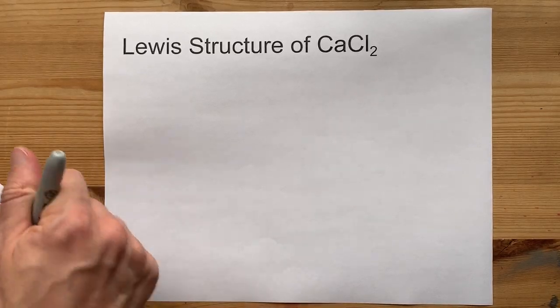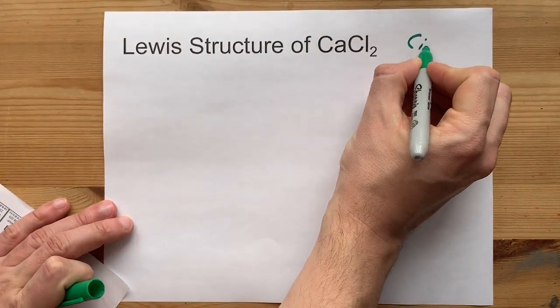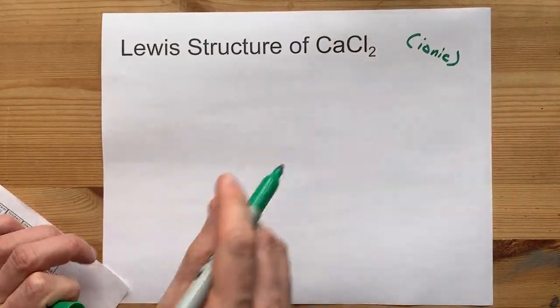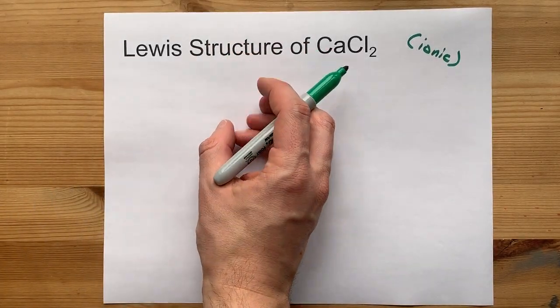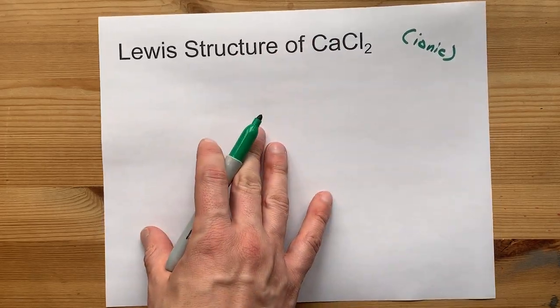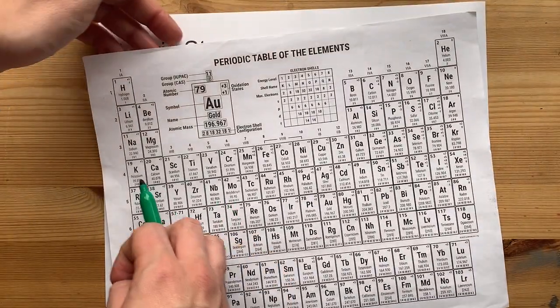When a metal and non-metal get together they form ionic compounds, which means the metal will give away its electrons to the non-metal and they'll both become ions. Let's see how that might work.